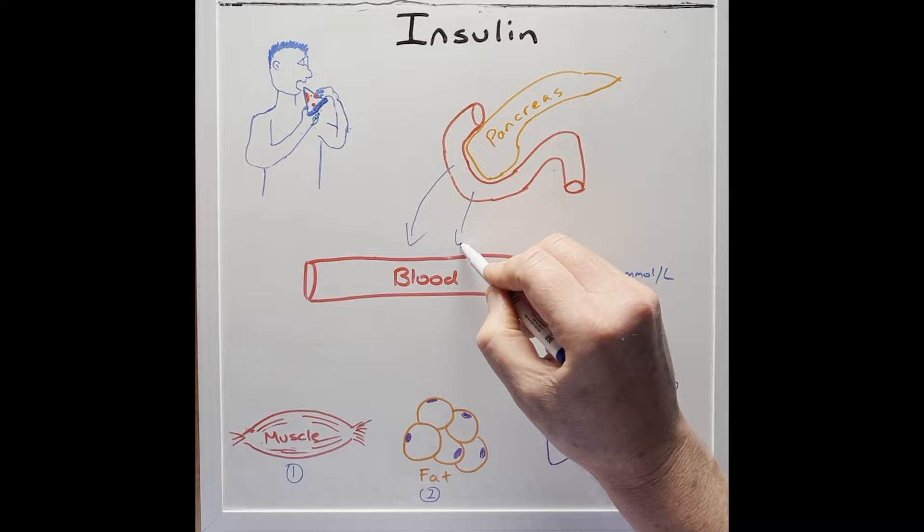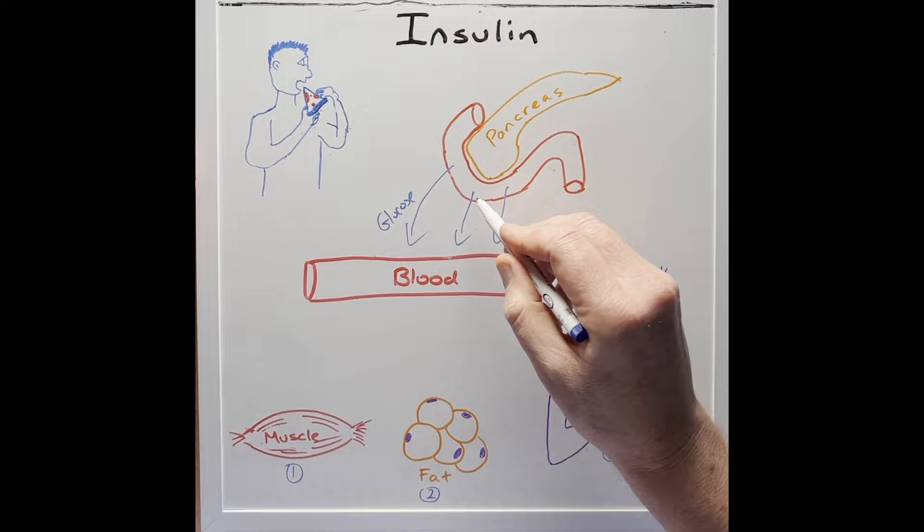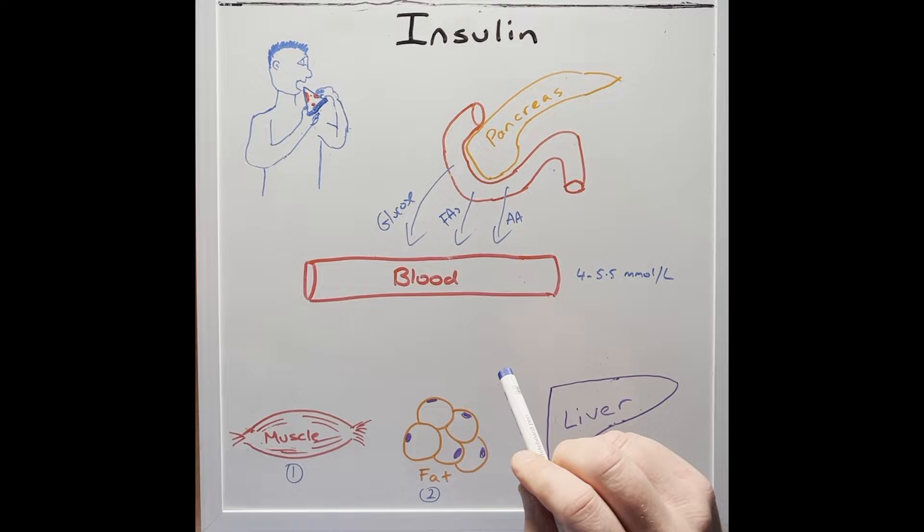All of these will be digested and absorbed across the intestine into the blood in three main forms: the carbohydrate as glucose, the fats as fatty acids and the proteins as amino acids. Let's focus on glucose.